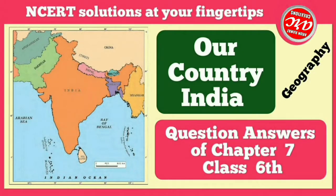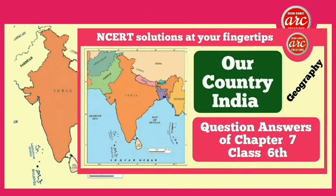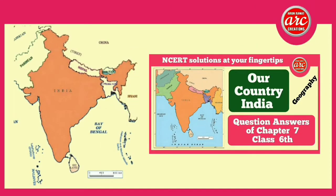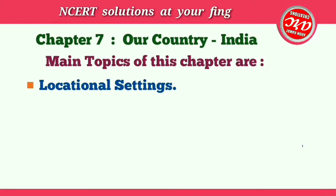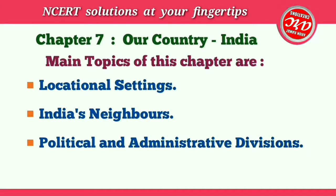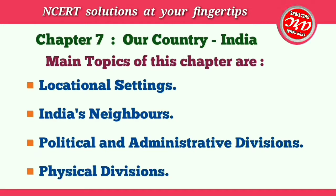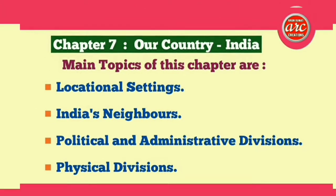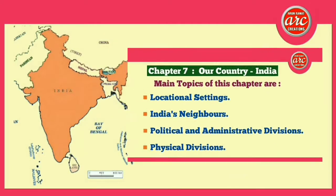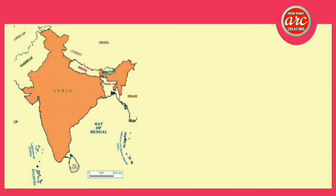Today we are going to do question answers of Chapter 7, 'Our Country India,' Class 6 Geography and NCERT solutions. The main topics of this chapter are: locational settings, India's neighbors, political and administrative divisions, and physical divisions. Most of these points are covered in the question answer section.